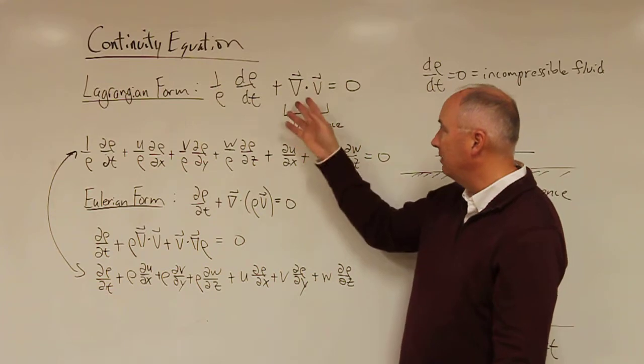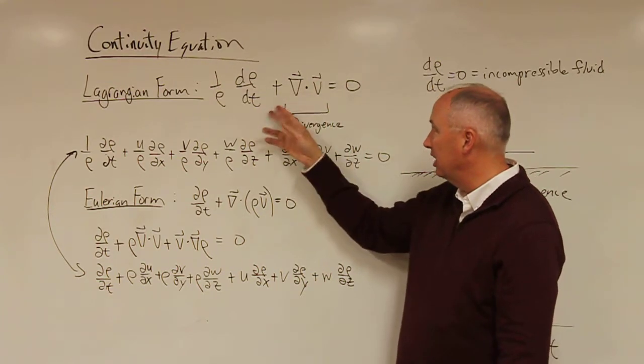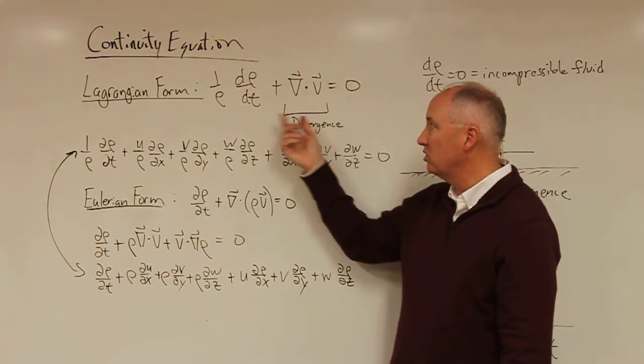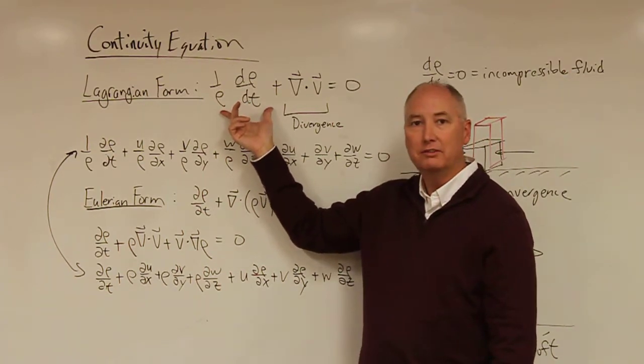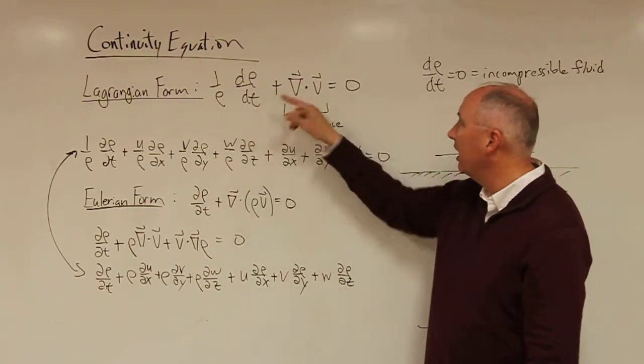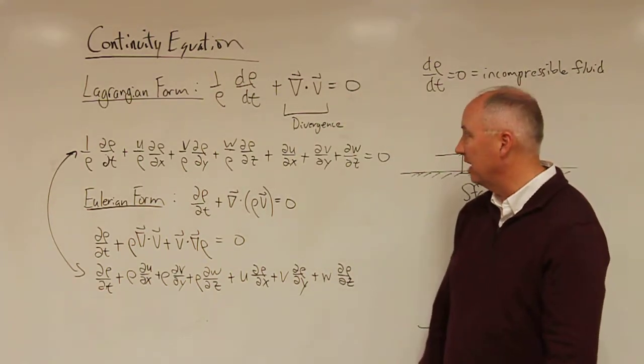And we set this equation equal to zero. So the divergence term and the total derivative of the density combine to have a zero change associated with that.